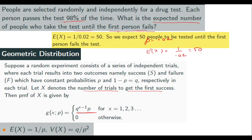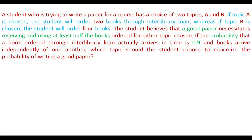So we have discussed four distributions: Binomial counts number of successes among n trials. Hypergeometric has a population of N individuals with M successes; you take a sample of n and find the probability of x successes. Negative binomial counts the number of failures preceding the rth success. Geometric counts the number of trials to get the first success. Poisson distribution will be discussed in the next lecture.